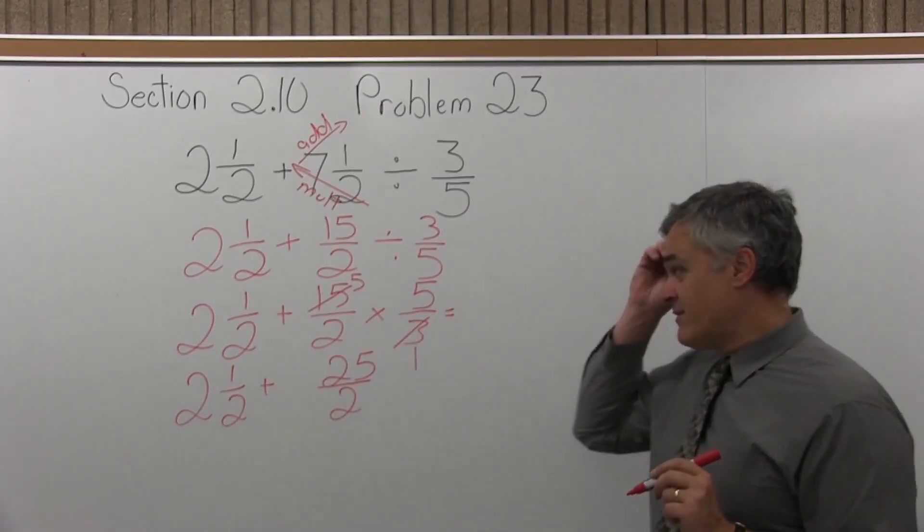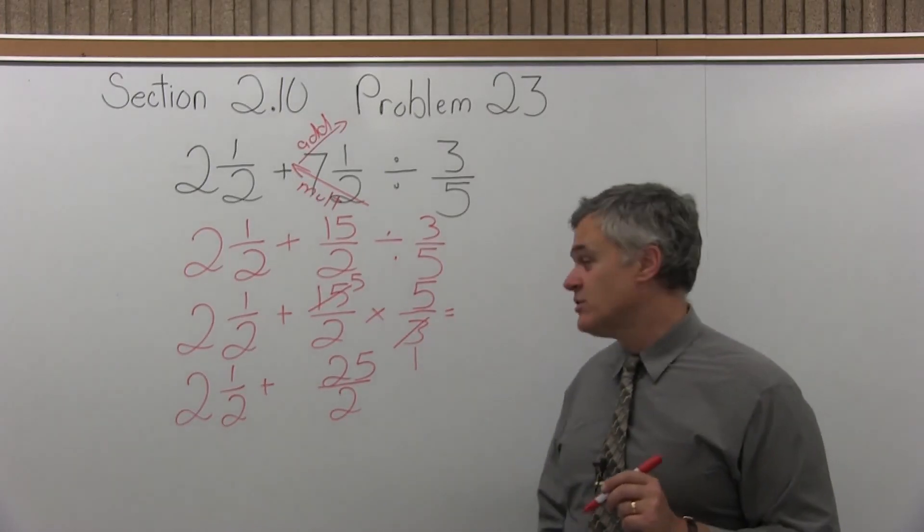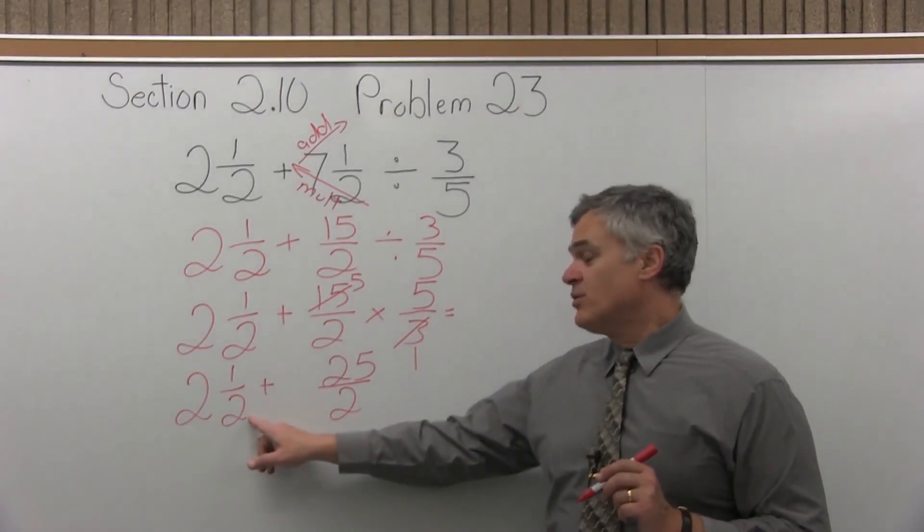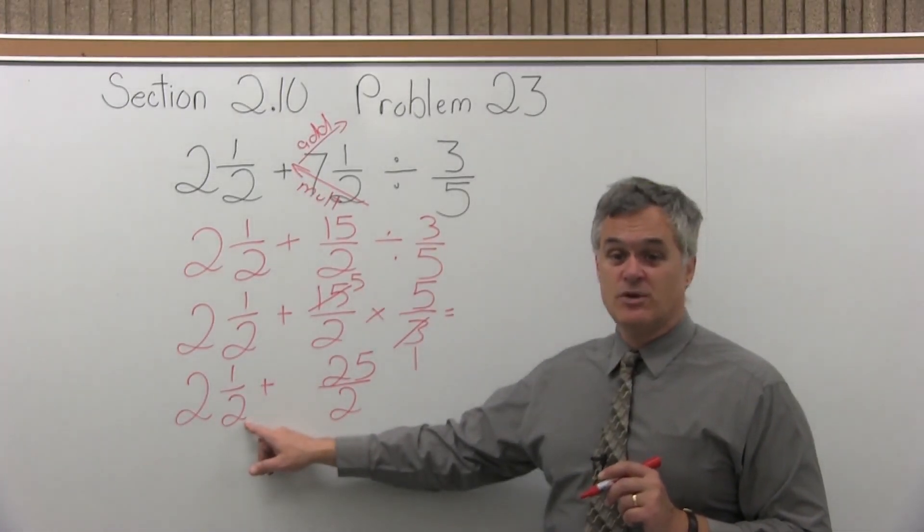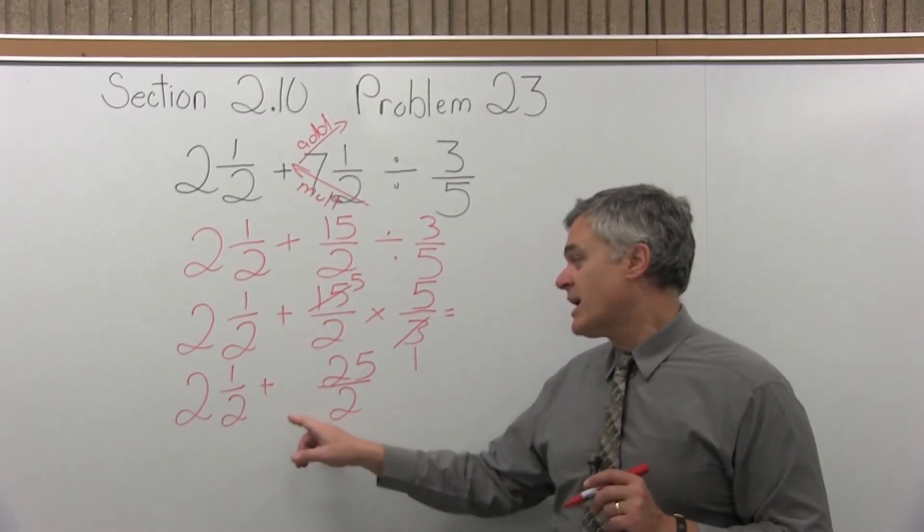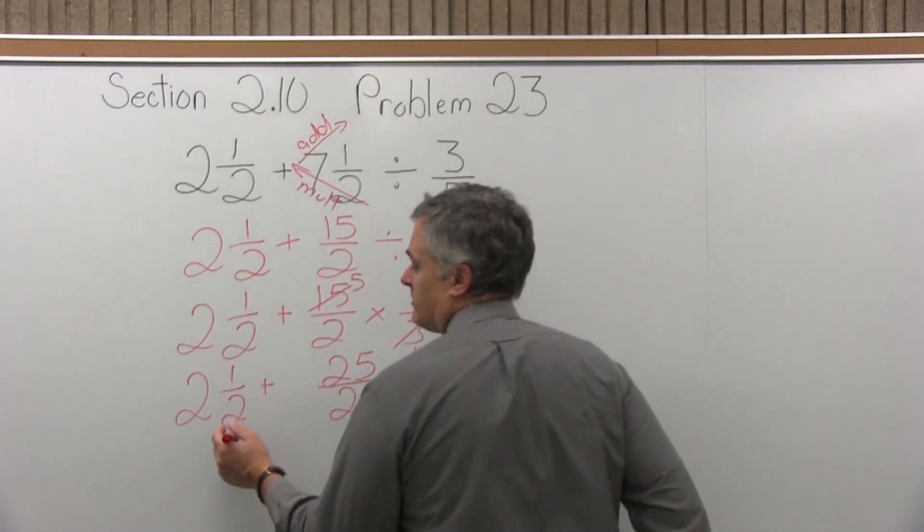So I have two and a half plus twenty-five over two. So I could make them both mixed numbers, like the two and a half, or I could go both improper fractions, which might be a little bit easier.